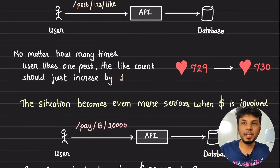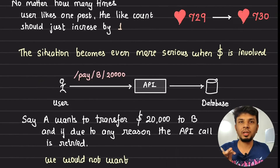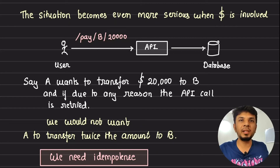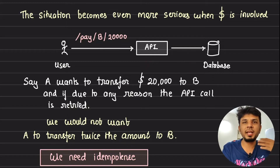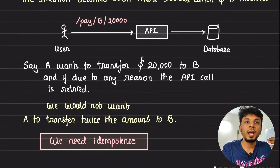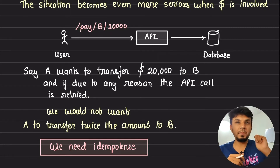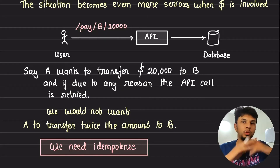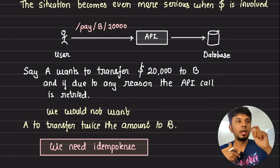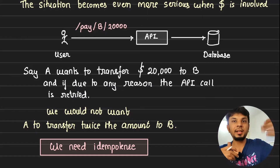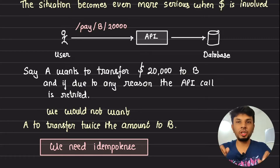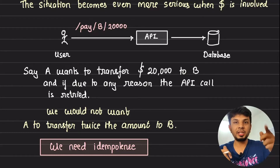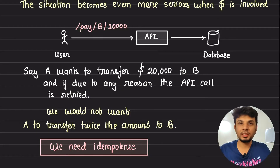Although that's a crude example, things become very serious when money is involved. Let's say we build a payment service where user A wants to pay user B $20,000. There would be an API like /pay/B/20000 which does the transaction between the two users. What we definitely do not want is if this API is invoked twice — due to retry or anything — we don't want the amount to be deducted twice from A's account and credited to B's account. This is why idempotency becomes very critical.